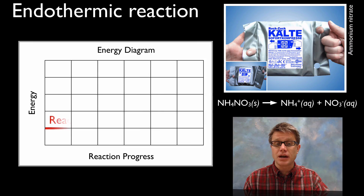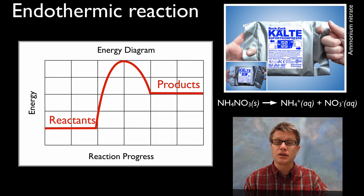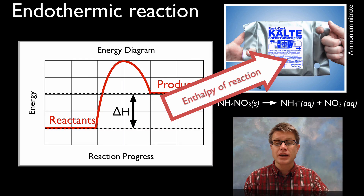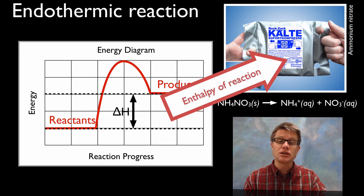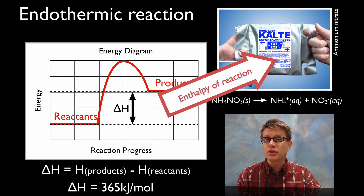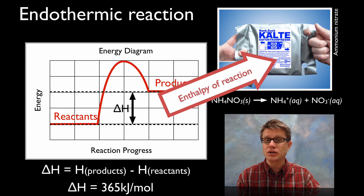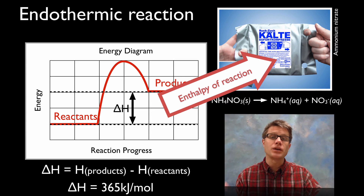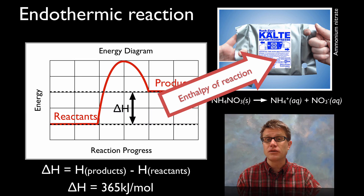If we look at an endothermic reaction, we have an uphill reaction where the products actually have more energy than the reactants. This is going to be our enthalpy of reaction, moving from the surroundings as thermal energy into the reaction itself. We could measure it and find that it is a positive value. We're going to use a calorimeter — we have the reaction take place surrounded by water, measure the change in heat of the water, and measure that enthalpy change.